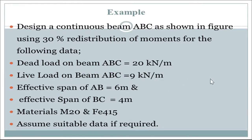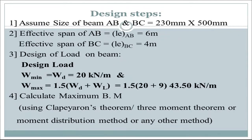Now we consider one example: design continuous beam ABC as shown in figure using 30% redistribution of moment. The design dead load on beams AB and BC is 20 kN/m. Live load on AB and BC is 9 kN/m. Effective span of AB is 6 m and BC is 4 m. Material: M20 and Fe415. Assume beam size 230 mm width and 500 mm overall depth for both beams. The minimum load WD = 20 kN/m; maximum load Wmax = 1.5WD + WL = 43.50 kN/m for both beams.